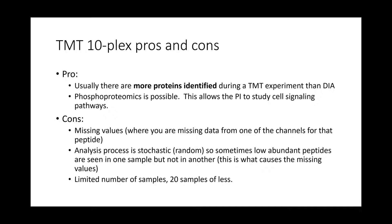The cons of a TMT experiment include what's called the missing value problem. This is where you're missing data from one of the channels for a particular peptide — if you don't have data for that peptide, you can't count it in your experiment. The reason for this is that the analysis process is stochastic, meaning it's somewhat random, so very low-abundant peptides near the threshold of measurability are seen in one sample but not another, causing the missing values.